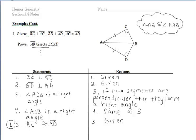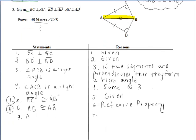We want to list out our givens. We should get our right angles as a result, and then we should recognize that they gave us a pair of congruent legs already within the triangles. Then we can use the reflexive property on segment AB since both triangles share that side, which gives us our pair of hypotenuses' congruence. So at that point, we can say the two triangles are congruent by HL.